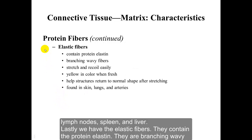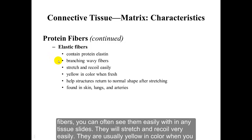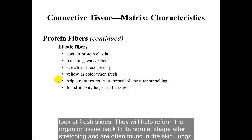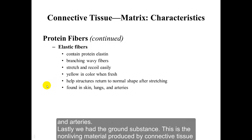Lastly, we have the elastic fibers. They contain the protein elastin. They are branching, wavy fibers that you can often see easily within tissue slides. They will stretch and recoil very easily. They are usually yellow in color when looking at a fresh slide, and they help return the organ or tissue back to its normal shape after stretching, often found in the skin, lungs, and arteries.